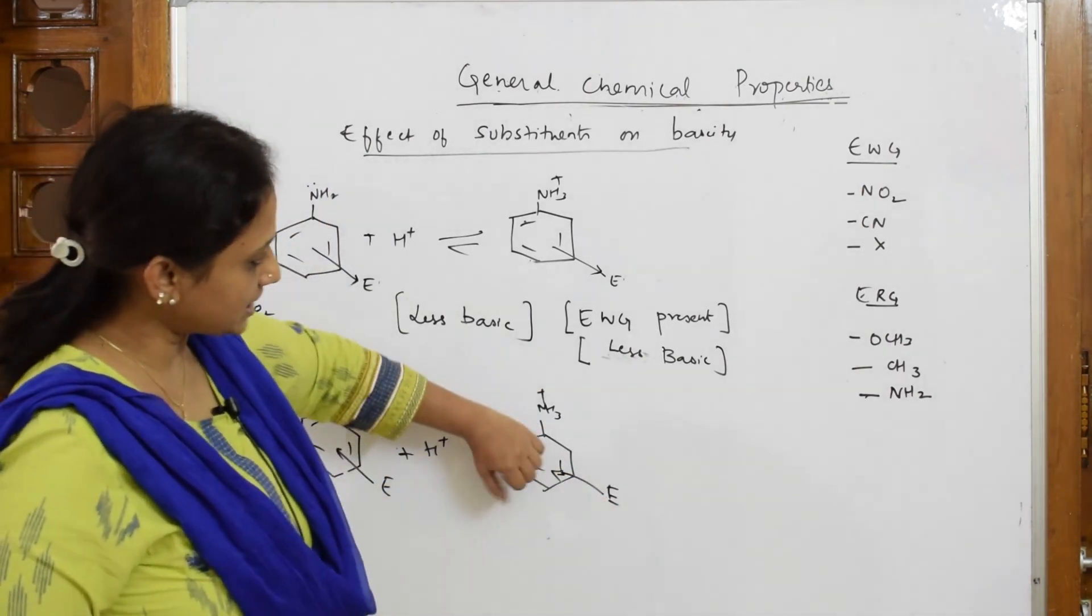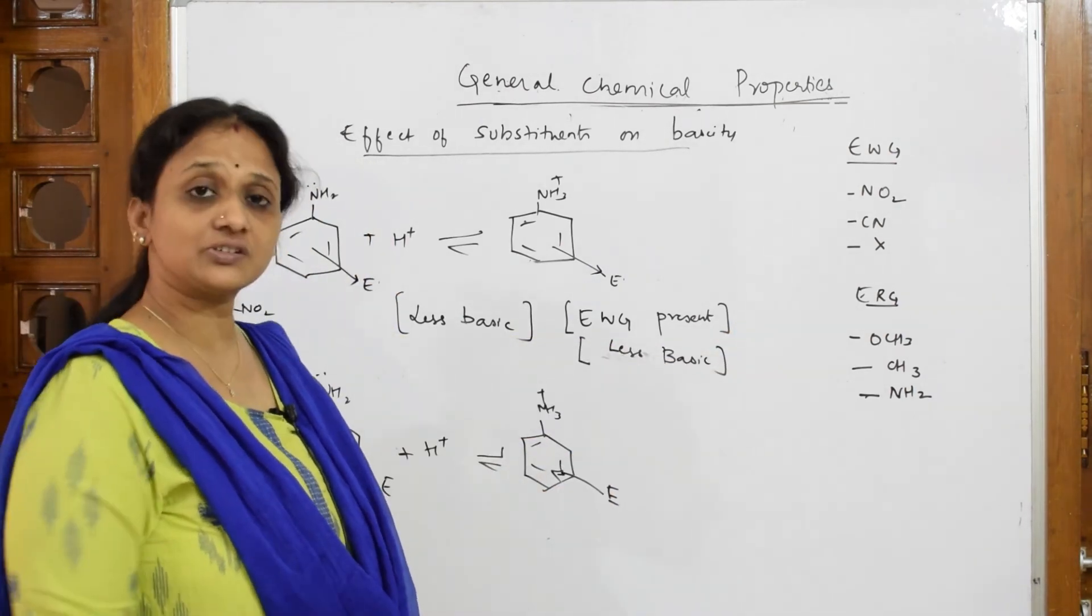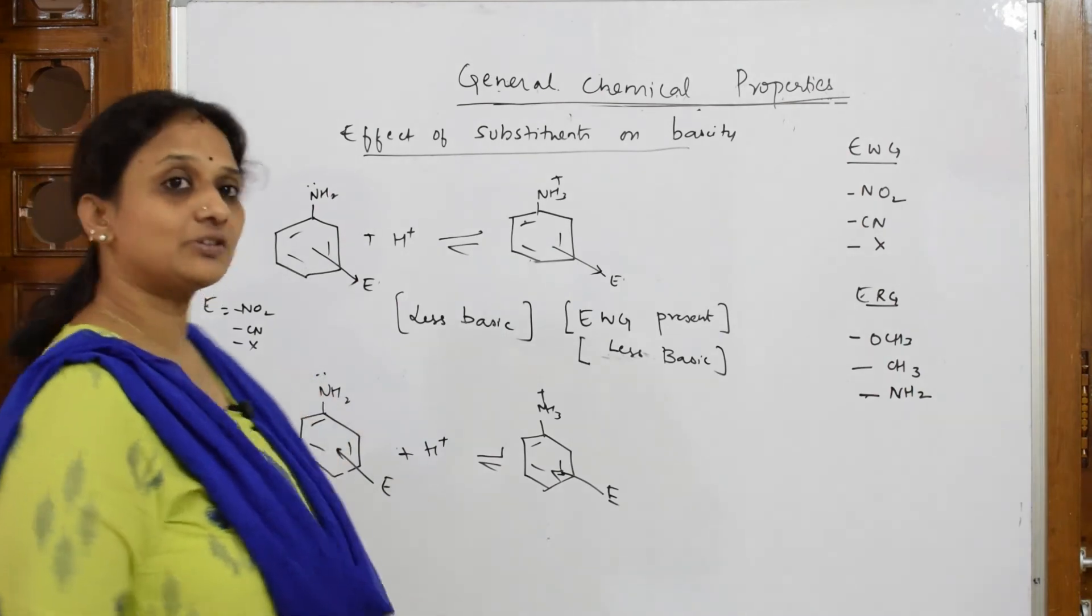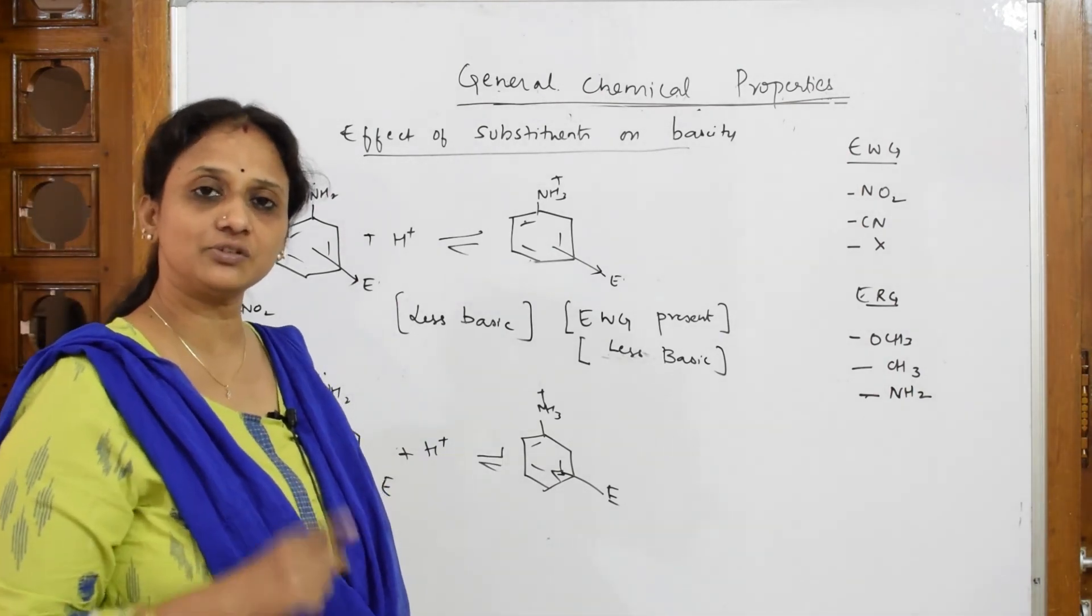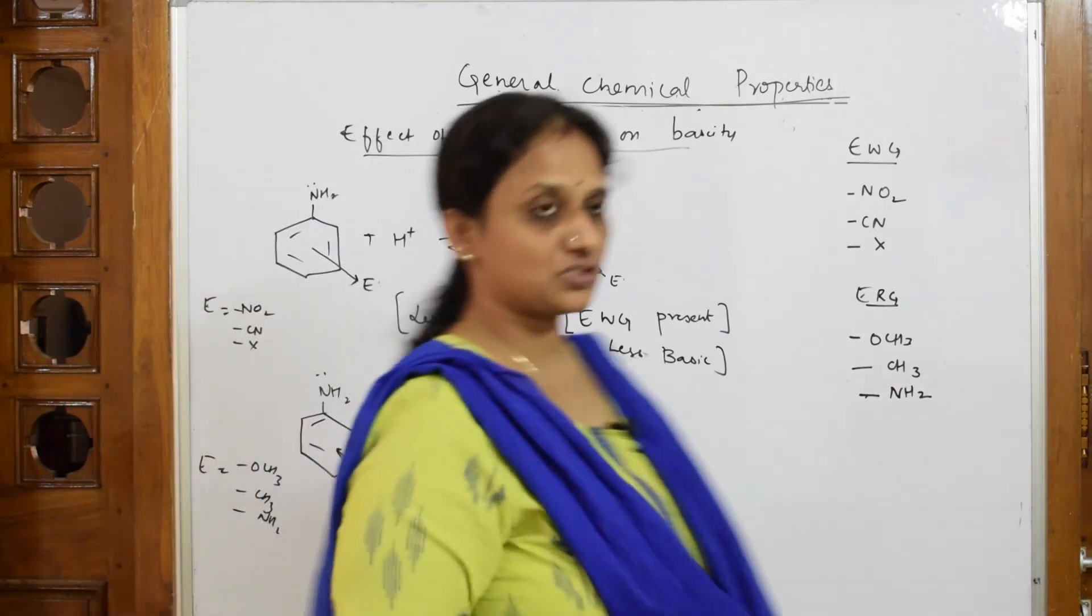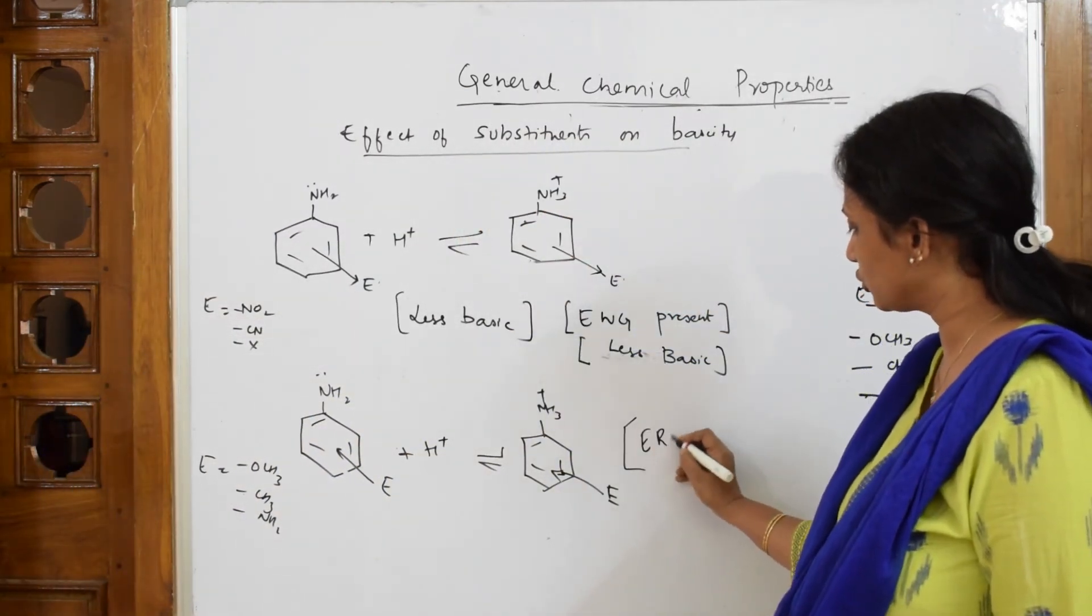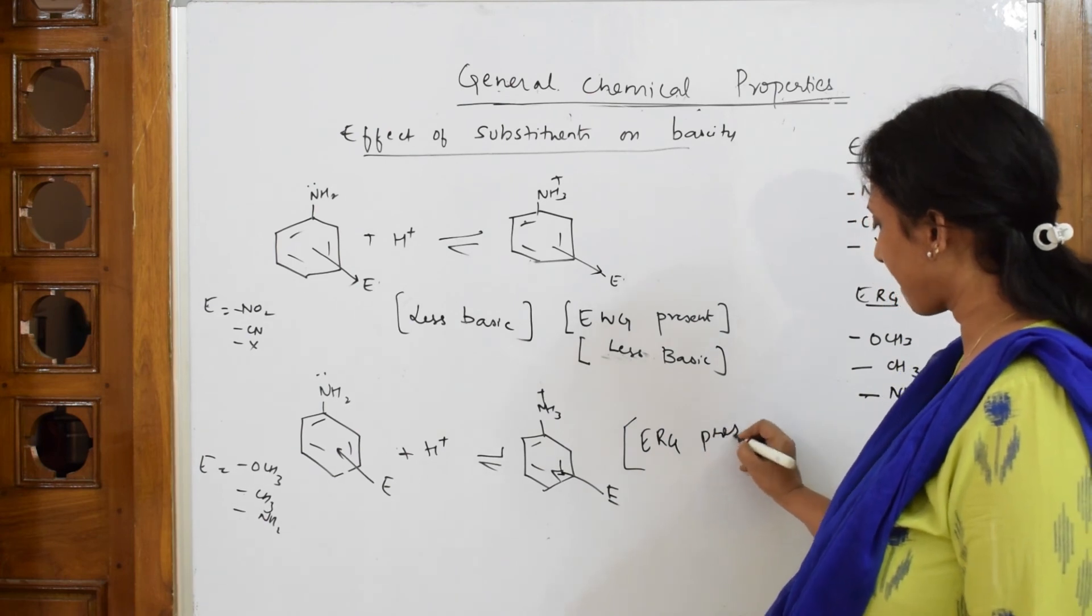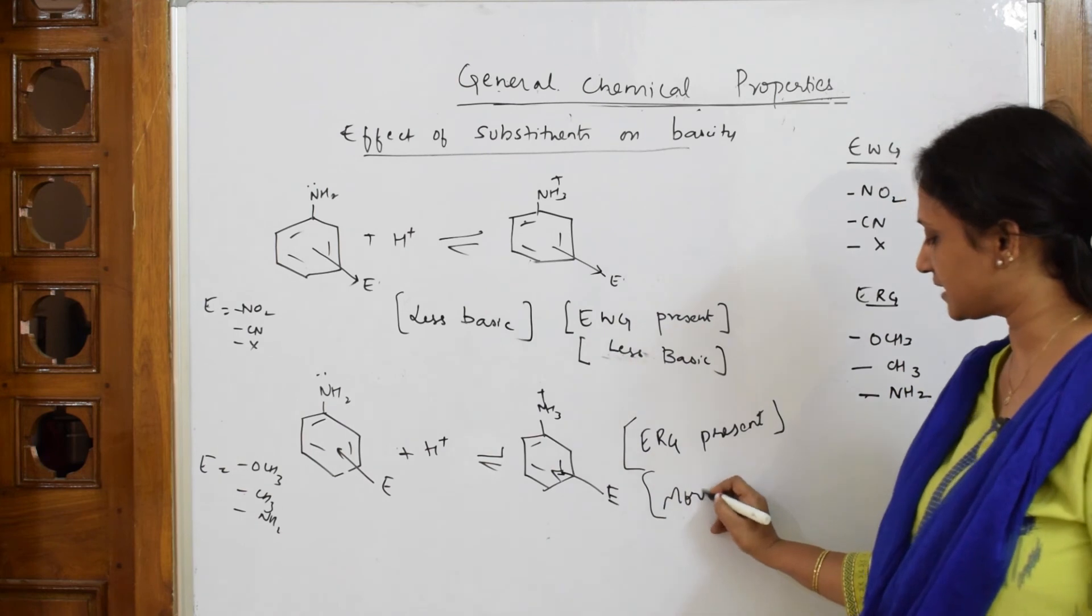I said, when they are trying to release the electrons, because of this, a lot of electron cloud increases on nitrogen. When a lot of electron cloud increases on nitrogen, it can easily release electrons. When it easily releases electrons, it is more basic in nature. So, what can I conclude? Important: ERG groups present, it is more basic in nature.